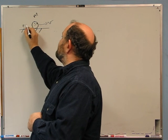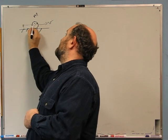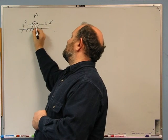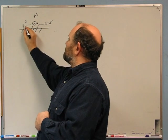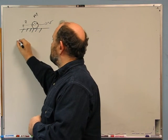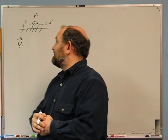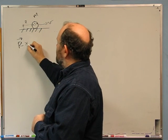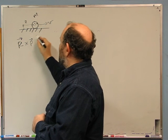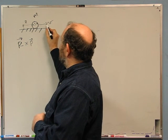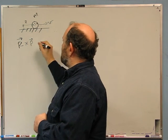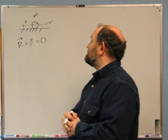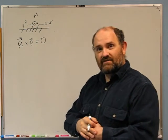The displacement — which I will call capital R — of the center of mass from the reference point, crossed with the momentum of the ball. Since its velocity is to the right, its momentum is to the right. Well, R and v are parallel, so that's zero. There is no angular momentum associated with the motion of the center of mass.